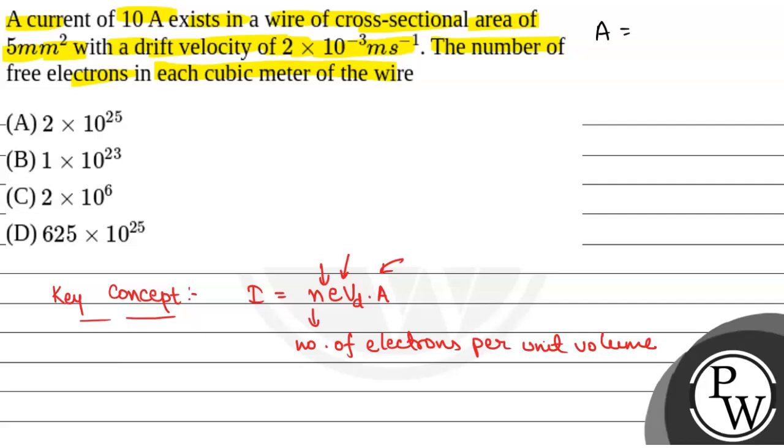We have been given A is equal to 5 mm square which is equal to 5 into 10 to the power minus 6 meter square and drift velocity VD is given as 2 into 10 to the power minus 3 meter per second and current I is given as 10 Ampere.